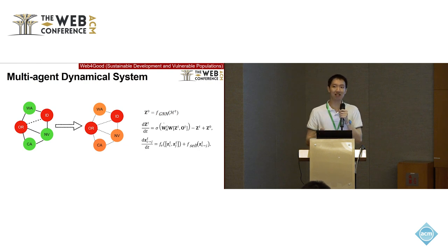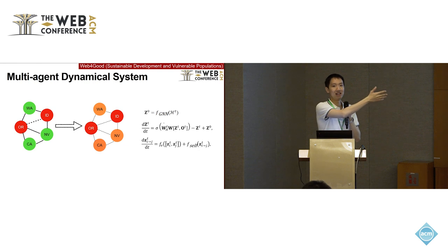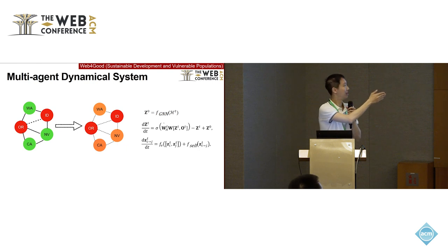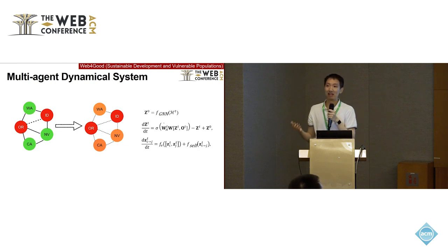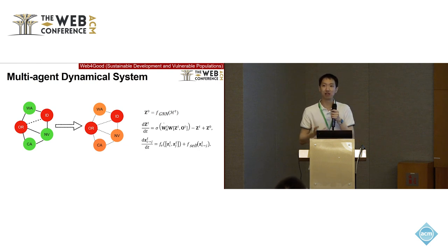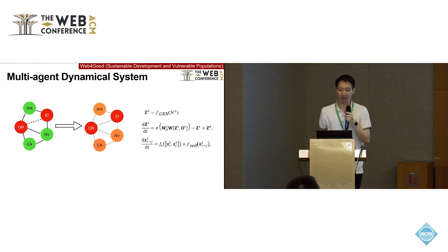By training this graph neural network, when we have day zero we can predict the change at day zero, and by adding that change we get day one. Continuing this process we get day two, day three, and day four. Since Z is the latent representation, we can decode our target — the pandemic severity — from Z. In this way, we can predict the future trajectory of the pandemic.